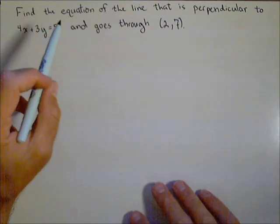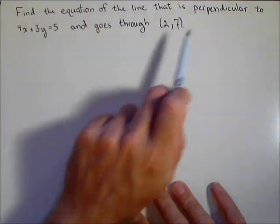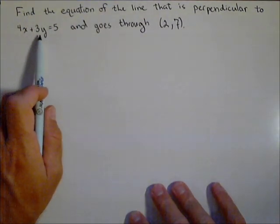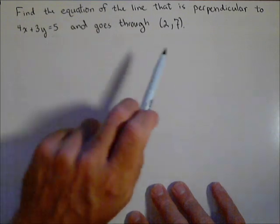Okay, in this problem, we want to find the equation of the line that is perpendicular to the line 4x plus 3y equals 5 and goes through (2,7).